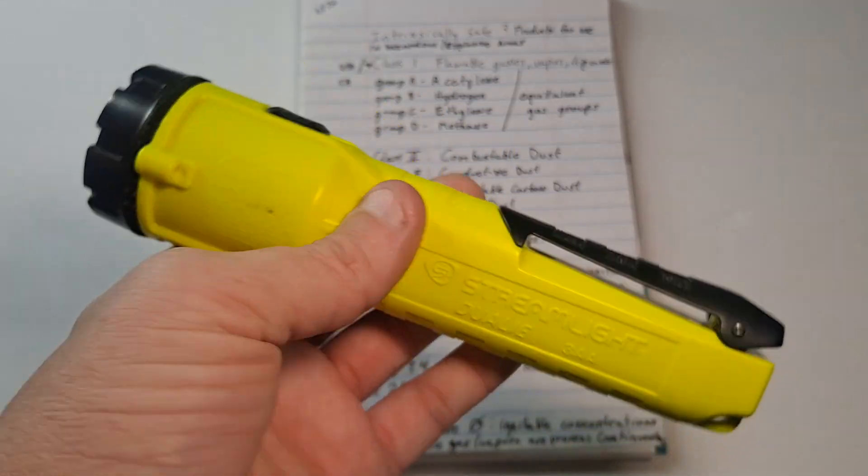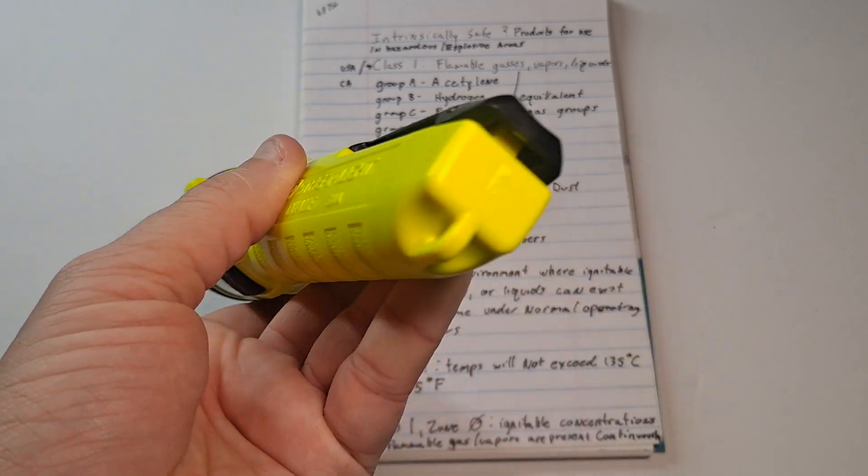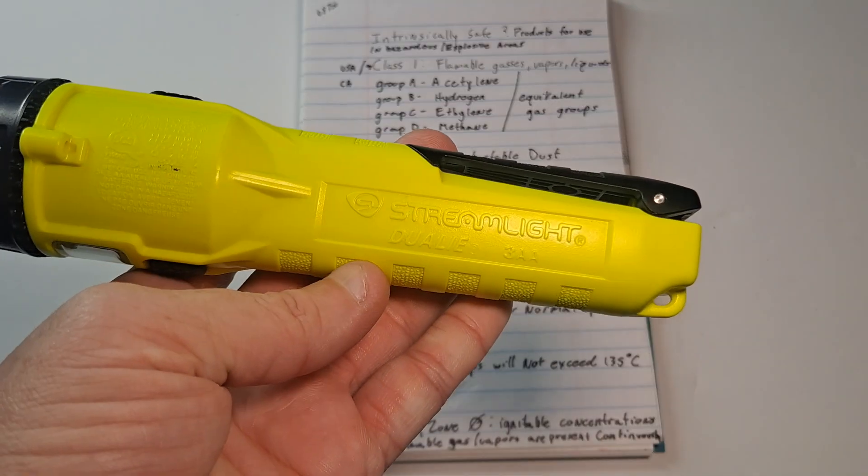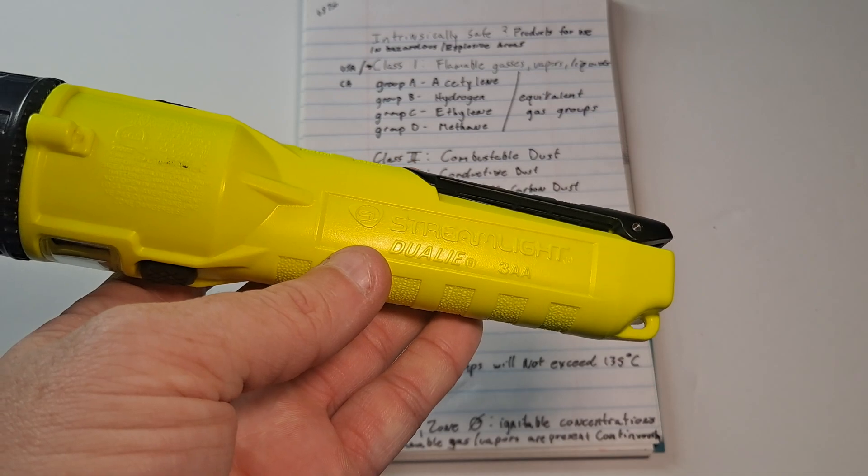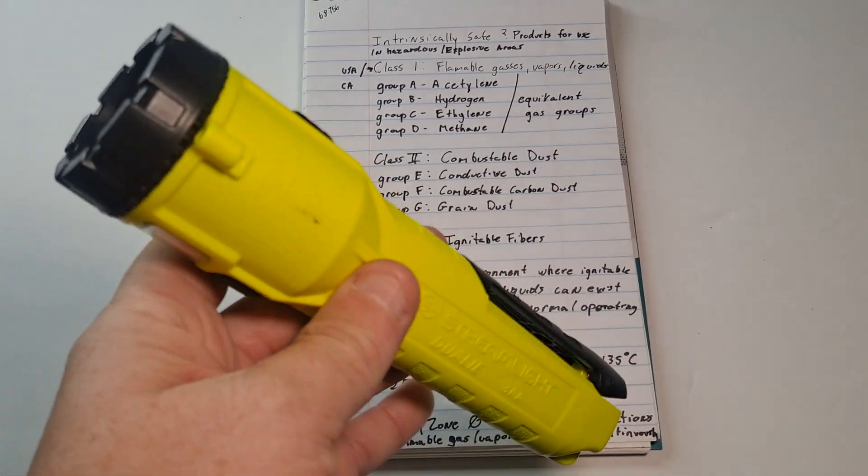They also make one with the laser, I guess, as to point things out. But that is it. So this is your Streamlight Dually 3AA Intrinsically Safe Flashlight.